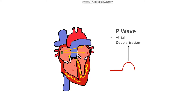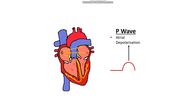We detect atrial depolarisation as the first deflection, which we call the P-wave. Remember, our wave of electricity is then held up at the atrioventricular node for a short amount of time, and we detect this as a flat line on the ECG that we call the PR segment.